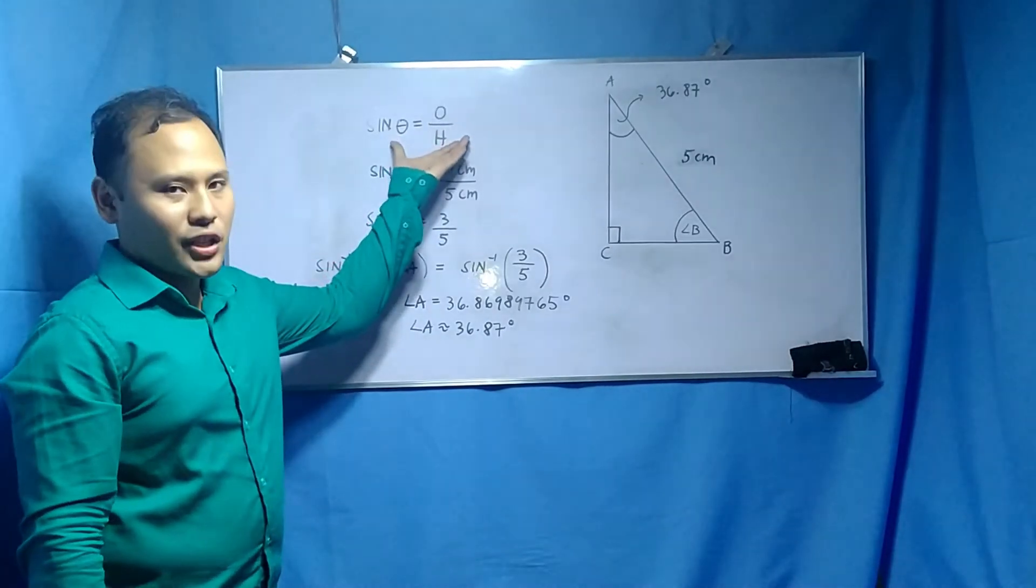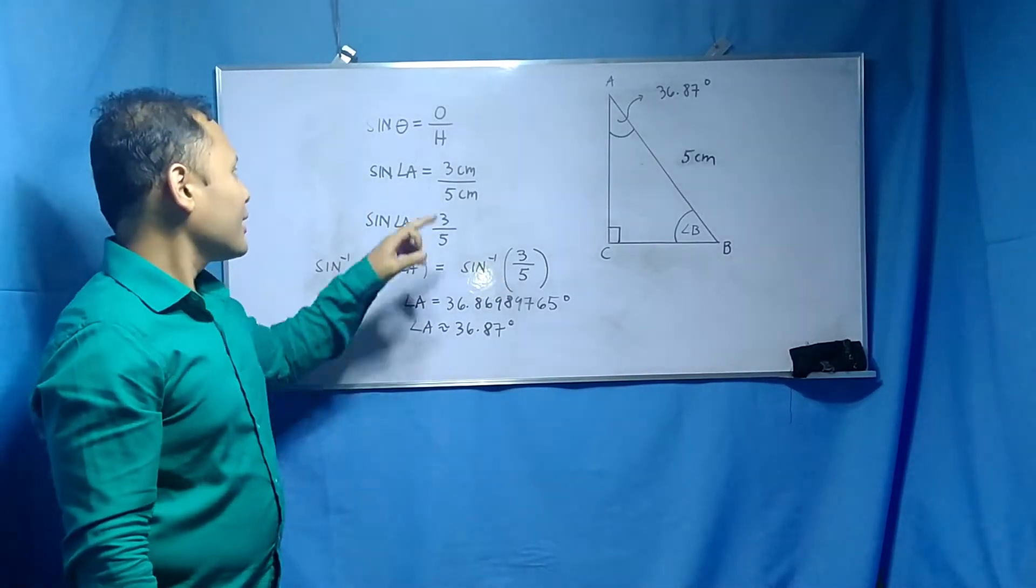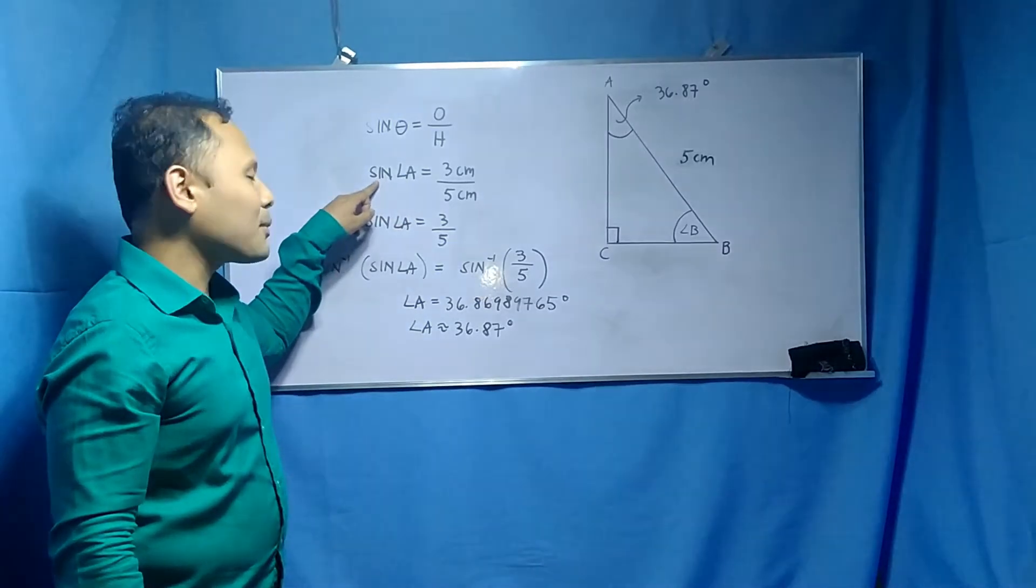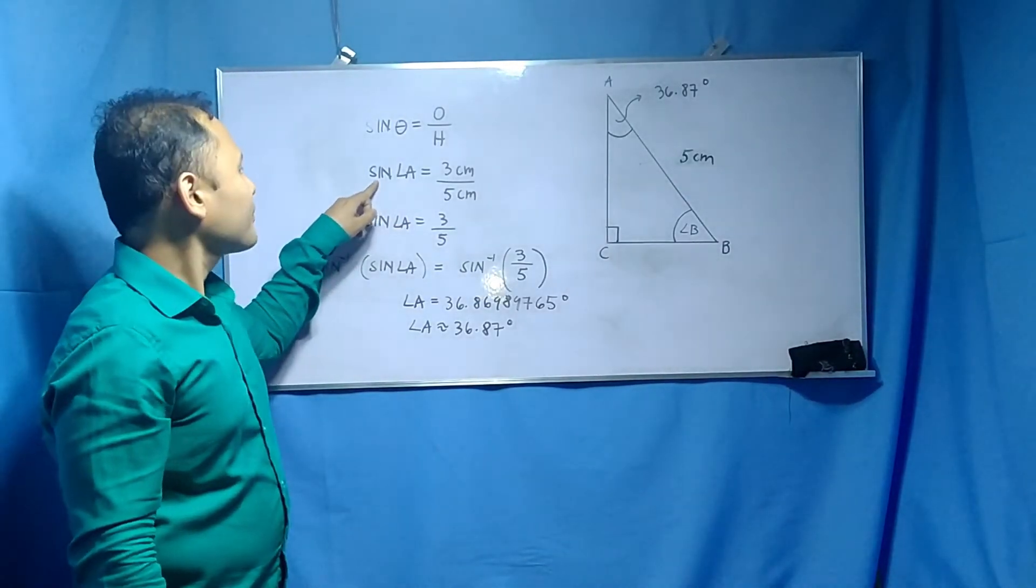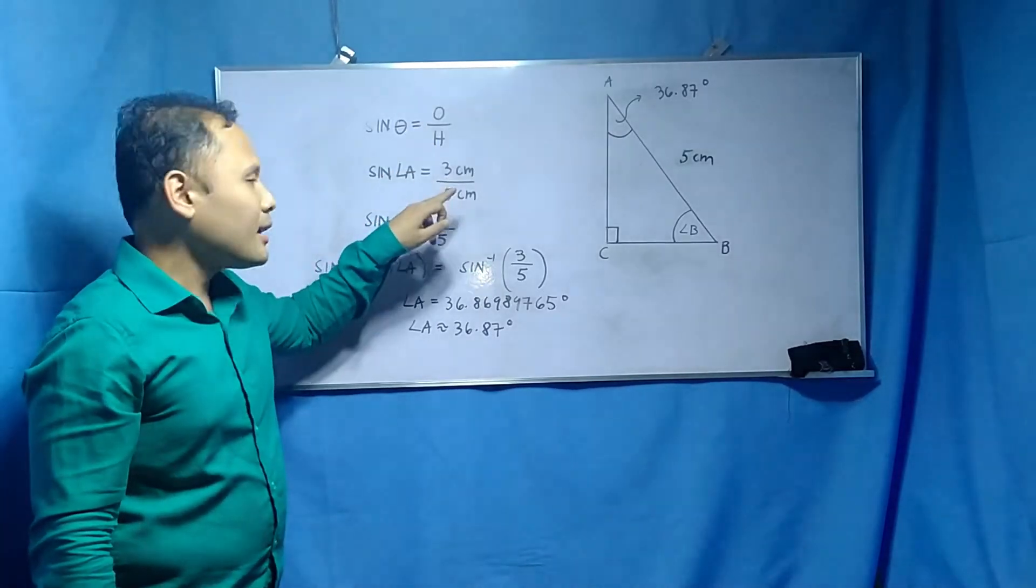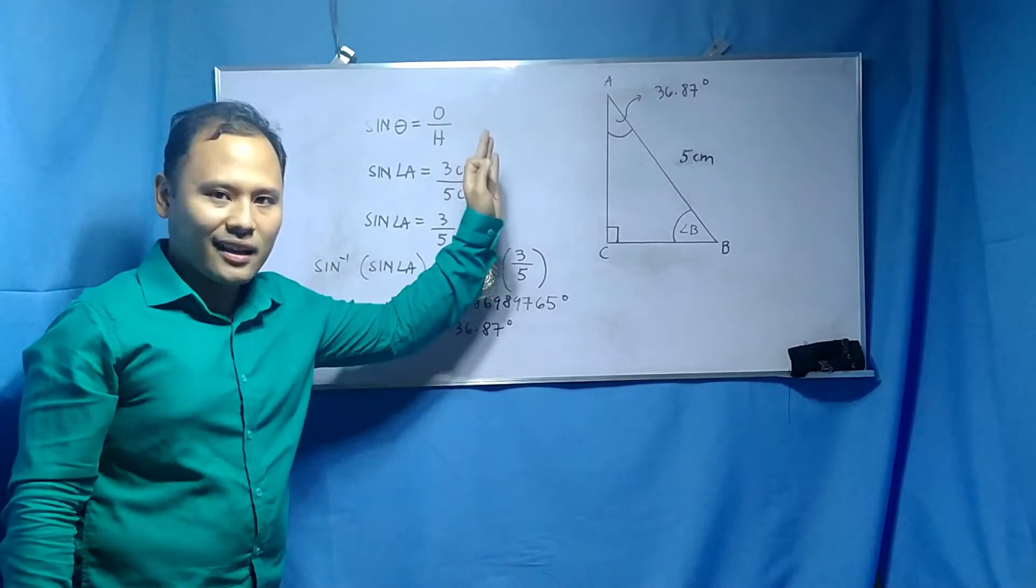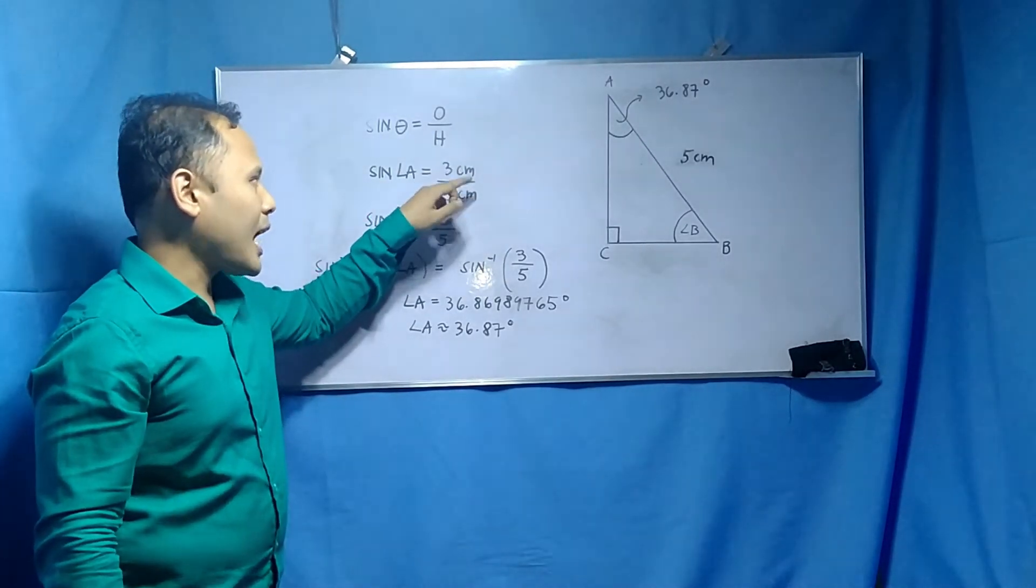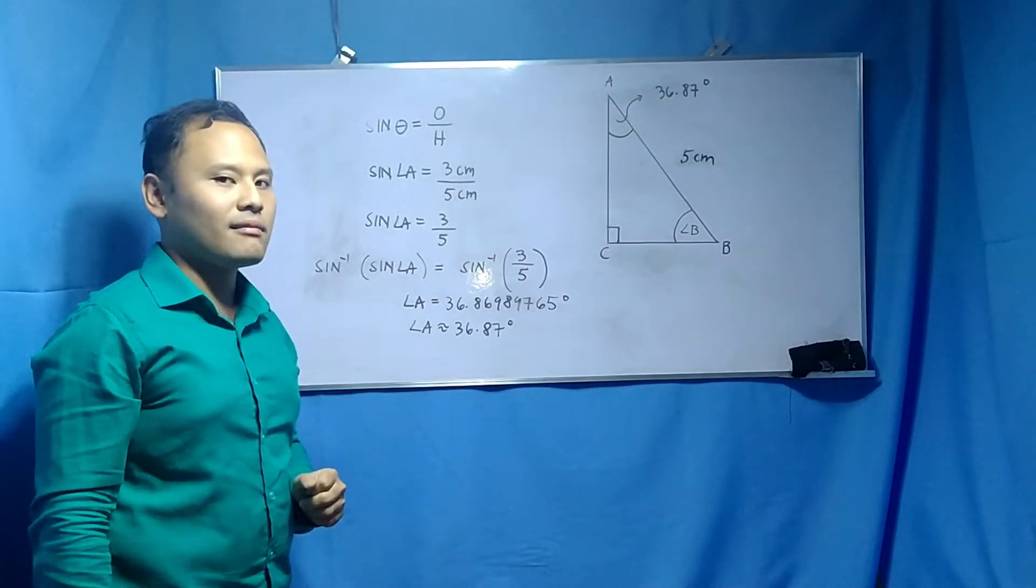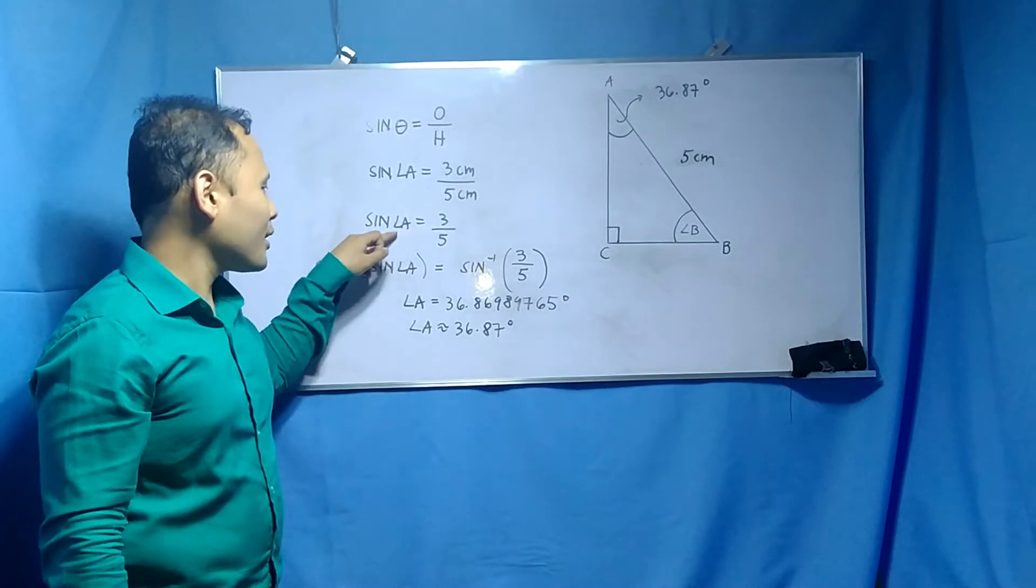Class, this is our sine function. But because we have chosen angle A as our acute angle theta, this symbol is replaced by angle A. And also, take note, class, sin is the abbreviation of the word sine. And according to our given just a while ago, our opposite measures 3 cm, our hypotenuse measures 5 cm. And because in the right-hand side we have the same expressions above and below the fractional bar, we can cancel them, leaving only 3/5 in the right-hand side.